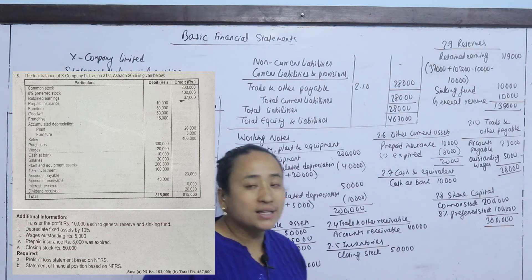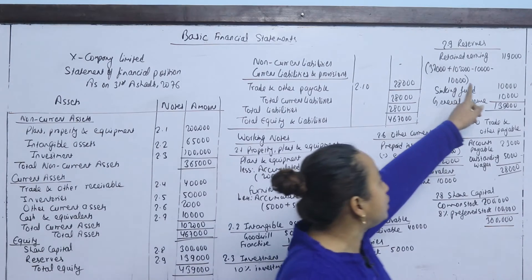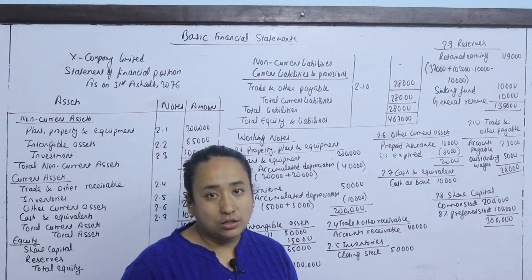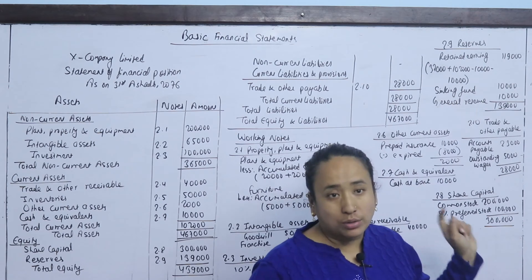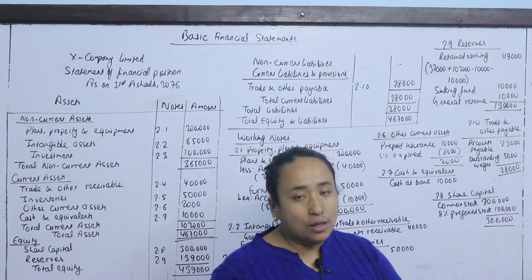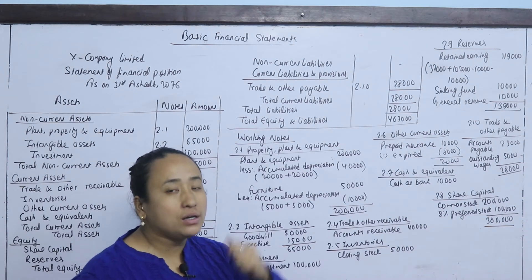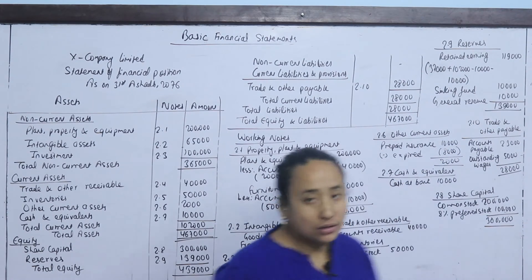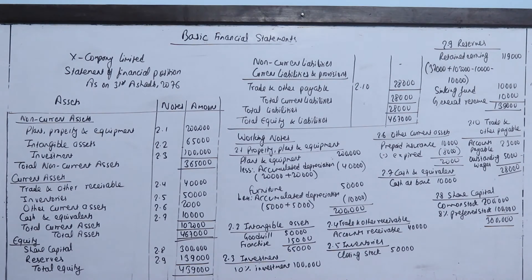Retained earnings is 1,19,000. Sinking fund and general reserve are added to reserve and surplus. After transferring to general reserve, the total reserve is 1,39,000. Share capital 3,00,000 plus reserve 1,39,000 gives total equity of 4,39,000.